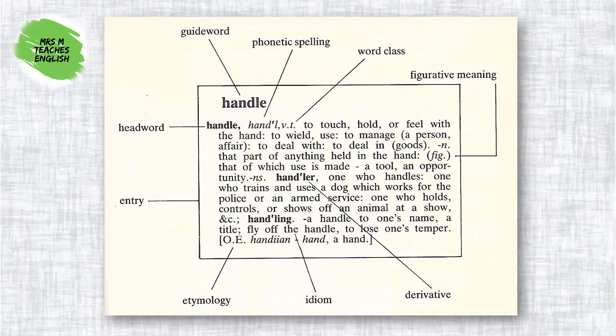This is what it looks like. You will see a number of abbreviations which are standard in most dictionaries. Word class simply means the part of speech of the word — whether it's a verb or a noun, for example. The derivative of a word refers to any words derived from or made from the original word; here, handler is a derivative of handle. You can also see how the word is used in a figurative sense and idiomatic usage — for example, to fly off the handle is an idiom meaning to become angry very quickly. This is obviously a figurative meaning. The etymology of a word is its origin; our word handle comes from the Old English word handian, which means a hand.